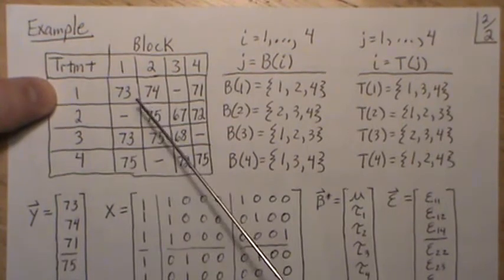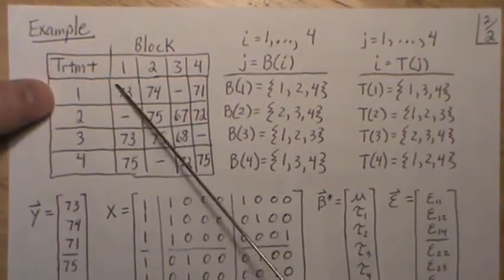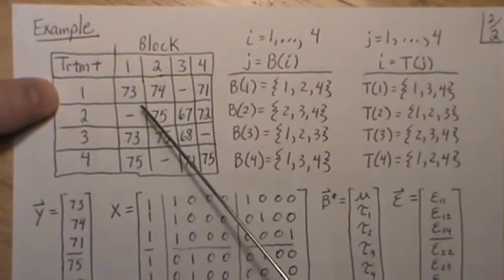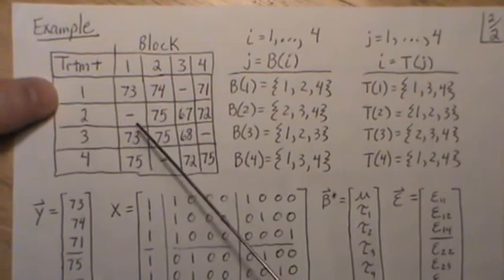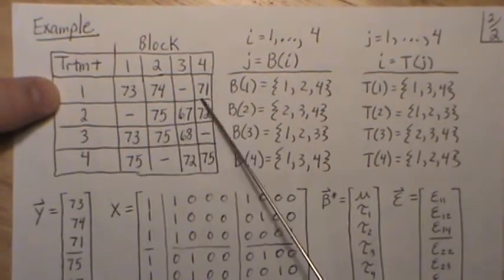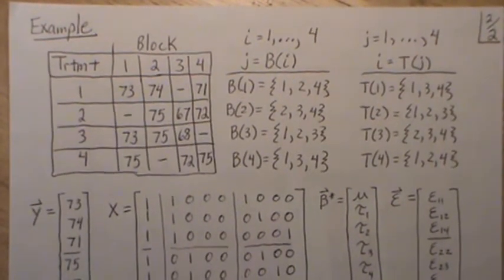We have treatments one, two, and three, and we have four blocks, but not all treatments can occur within a block. There's a block size of three, so K equals three. Treatment one is in blocks one, two, and four—the same—but notice here though...